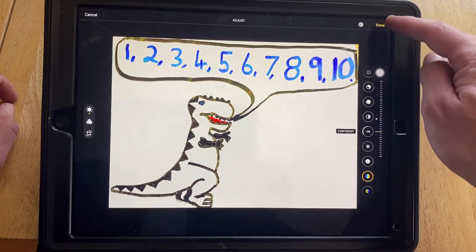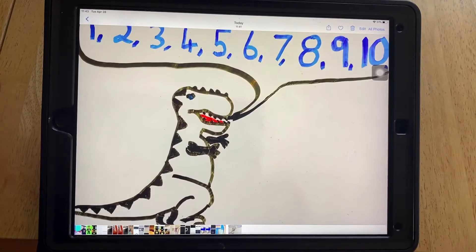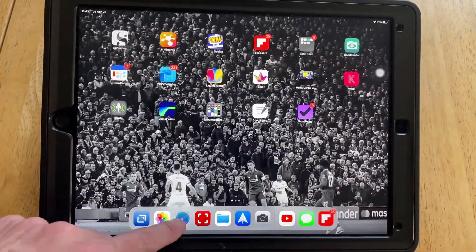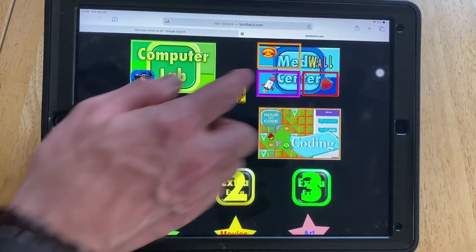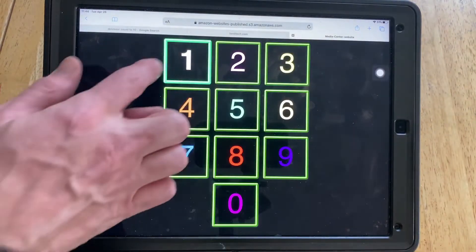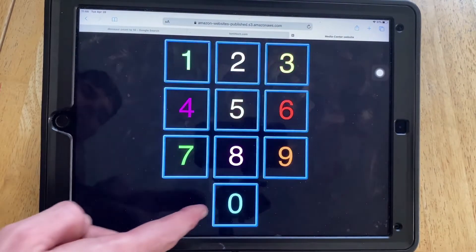I did also change some of the filters and some of the effects. But next, we have to go to the internet. And here we're going to click on the rocket ship. Grace, what is the password, the new password? One, zero, zero, zero. Good job. And that takes you to the remote learning site.